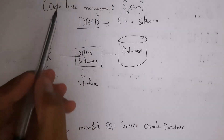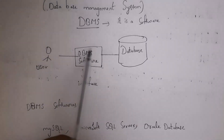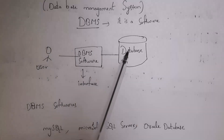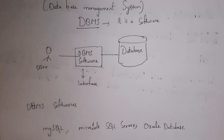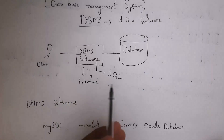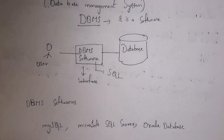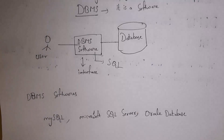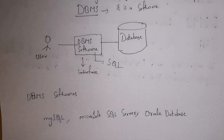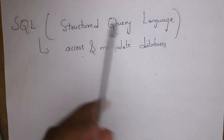DBMS stands for Database Management System. DBMS is software used to establish communication between the user and the database. By using DBMS software, a user can create a database, insert tables inside a database, and perform various operations on the database. Inside this DBMS software we use SQL to perform these operations — DBMS acts as an interface between user and database. Some common DBMS softwares are MySQL, Microsoft SQL Server, and Oracle Database.